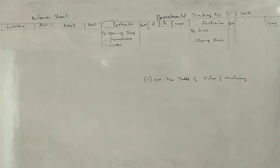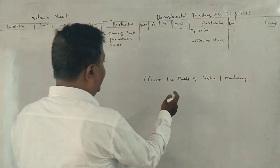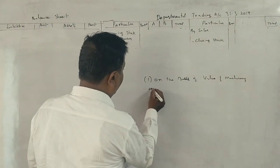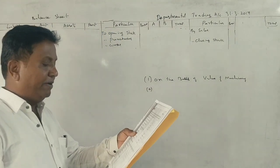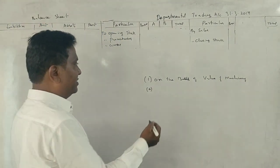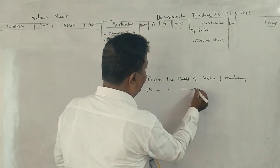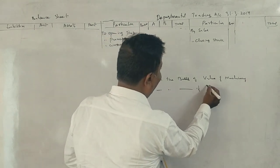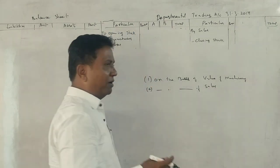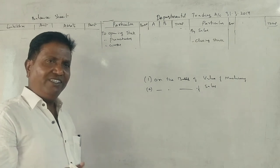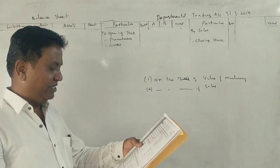This is the 2016 question paper. Value of machinery: 16, 20. Commission on sales: 23. Commission on sales is allocated on the basis of sales ratio. The basis for commission on sales is the sales ratio.